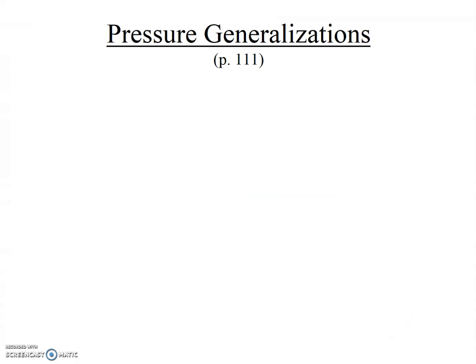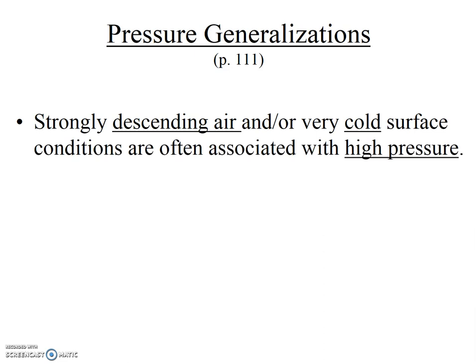Next, we're going to make some important generalizations about atmospheric pressure — in particular, where we might expect to find high and low atmospheric pressure. For high pressure: strongly descending air and/or very cold surface conditions are often associated with high pressure. If air is moving downward, think of it as more molecules being present near the Earth's surface, and thus higher pressure. Also, when air cools, it contracts and is more dense, and dense air moves downward, so there are more molecules present and thus higher pressure.